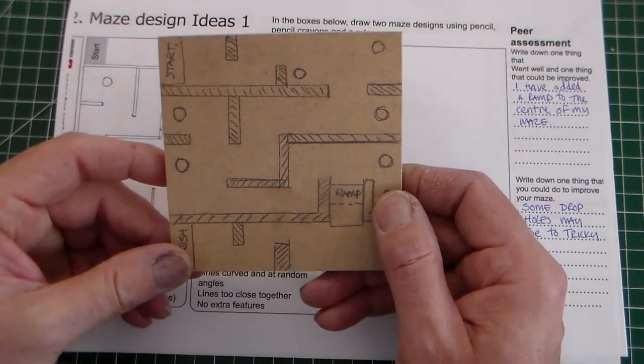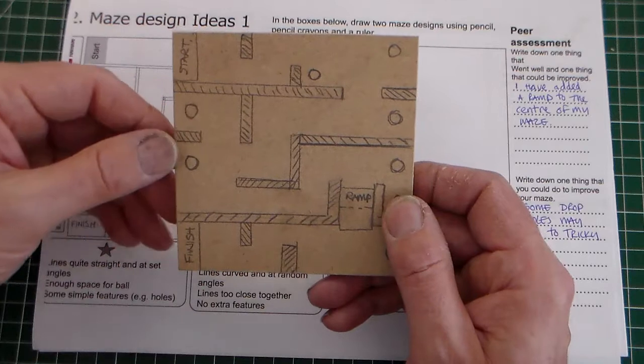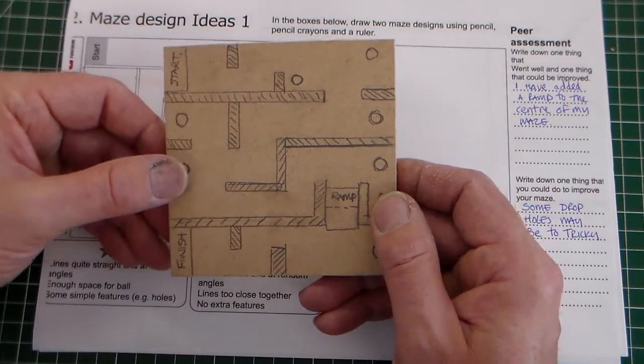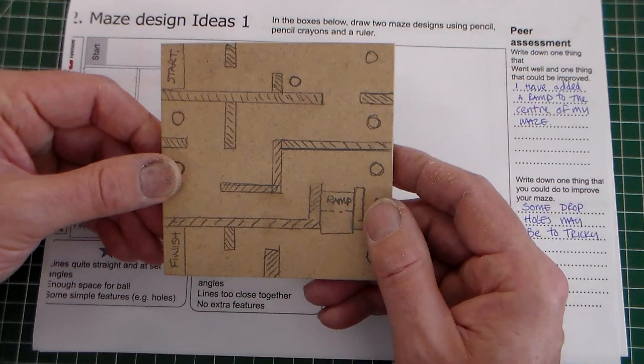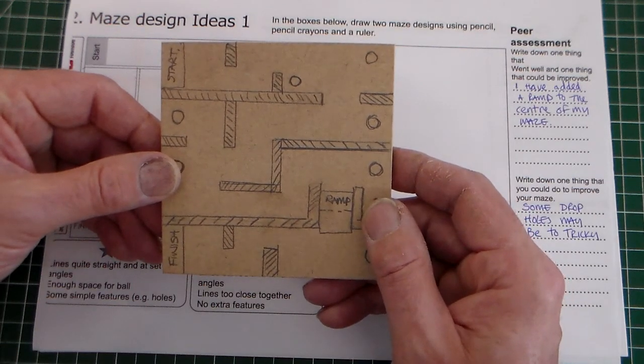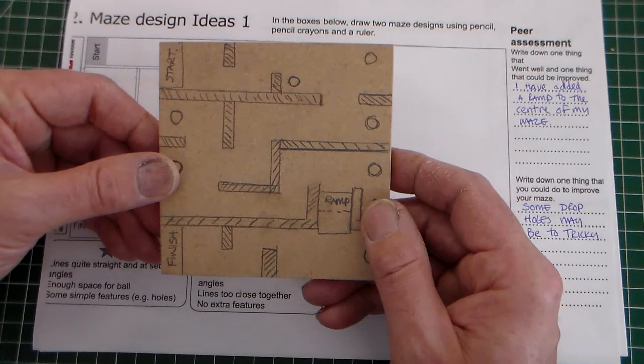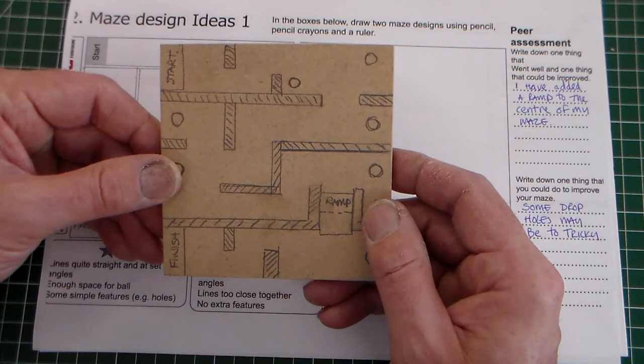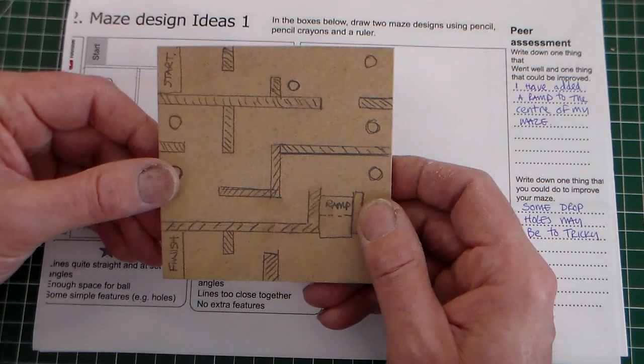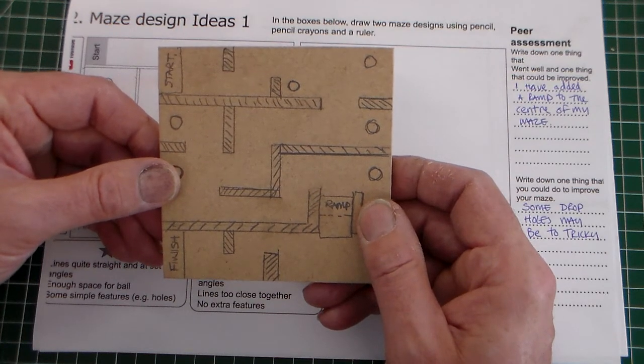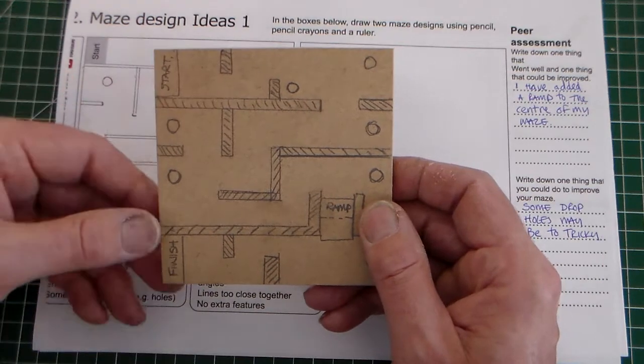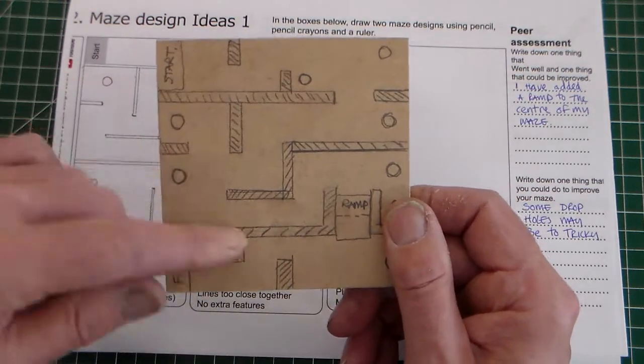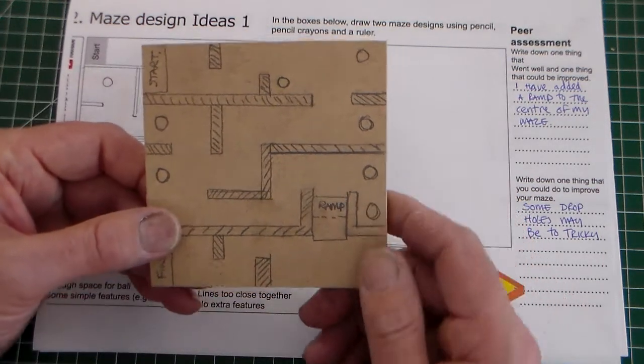Hello there. In this clip we're going to look at designing a maze, the maze part for our maze game. And to do this we're going to use a process called the iterative design process. Now that might sound really complex, but basically it's broken down into three steps: formulate, test, and evaluate. So we're going to go through stages to get to this design and then go to our final wood design.